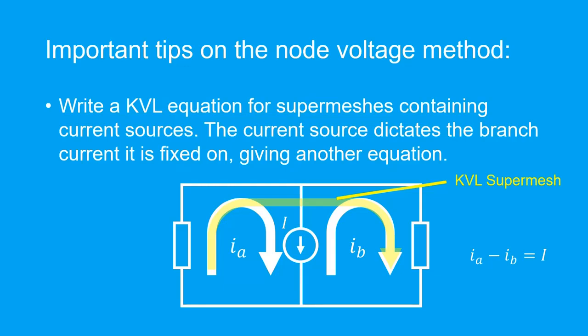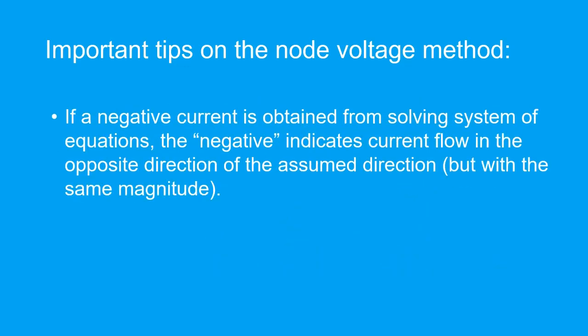A KVL equation is to be written for a super mesh containing a current source. The current source dictates the branch current it is fixed on, and this gives another equation. After solving the system of linear equations, if the current we obtain is negative, it means that it flows in the opposite direction of the direction we assigned it, but it still has the same magnitude.